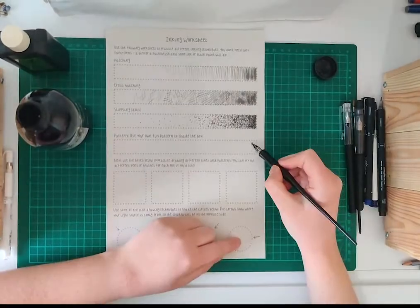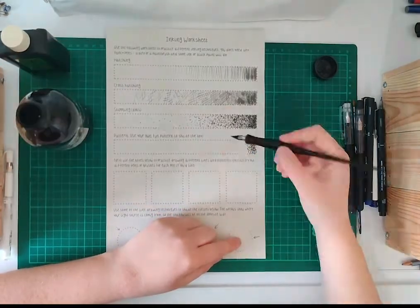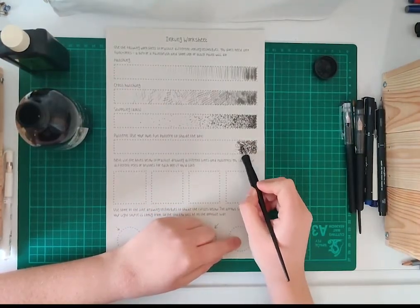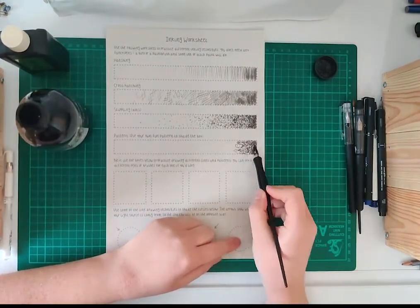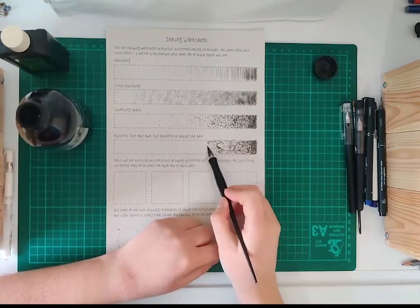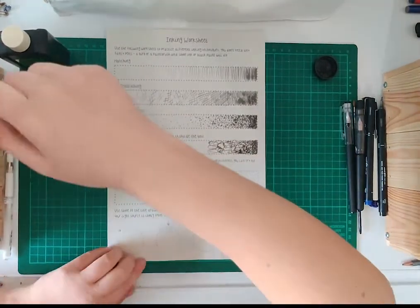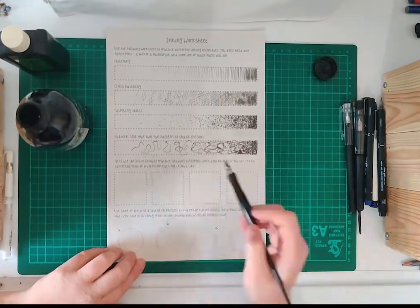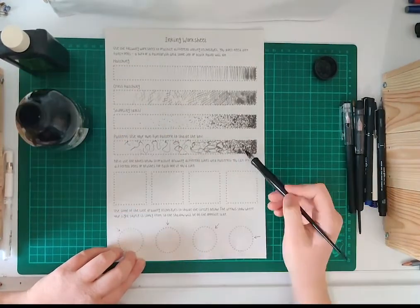For the last box, you can use whatever pattern you like. You could try circles, stars, squiggles, or any other shape. I'm going to use some squiggles. Once again, start at the dark end, then spread the pattern out until it's white.